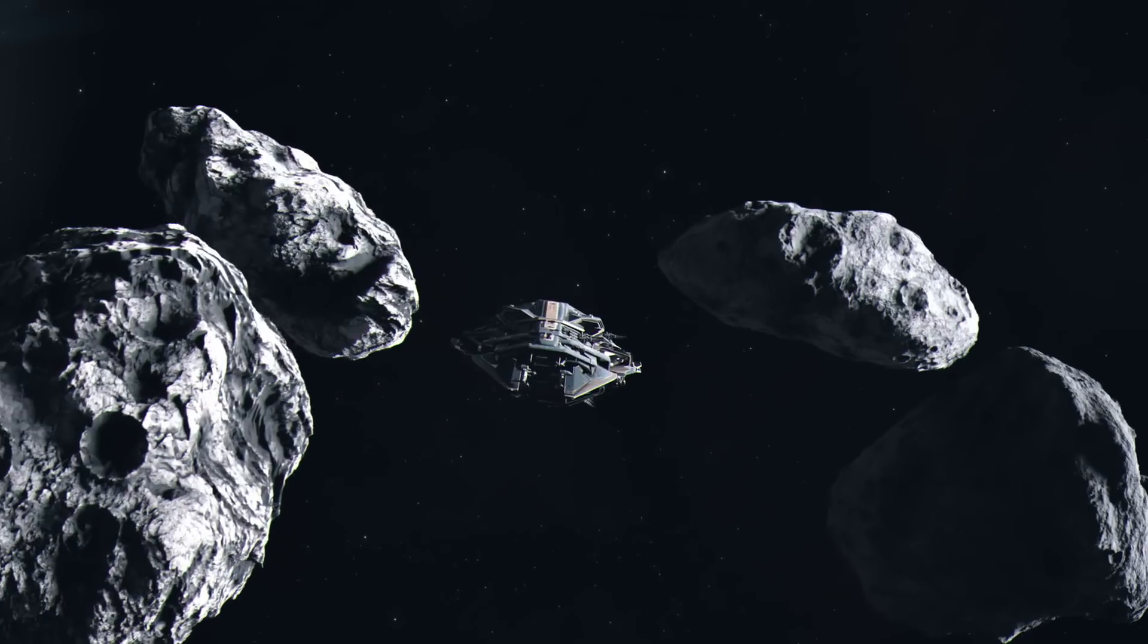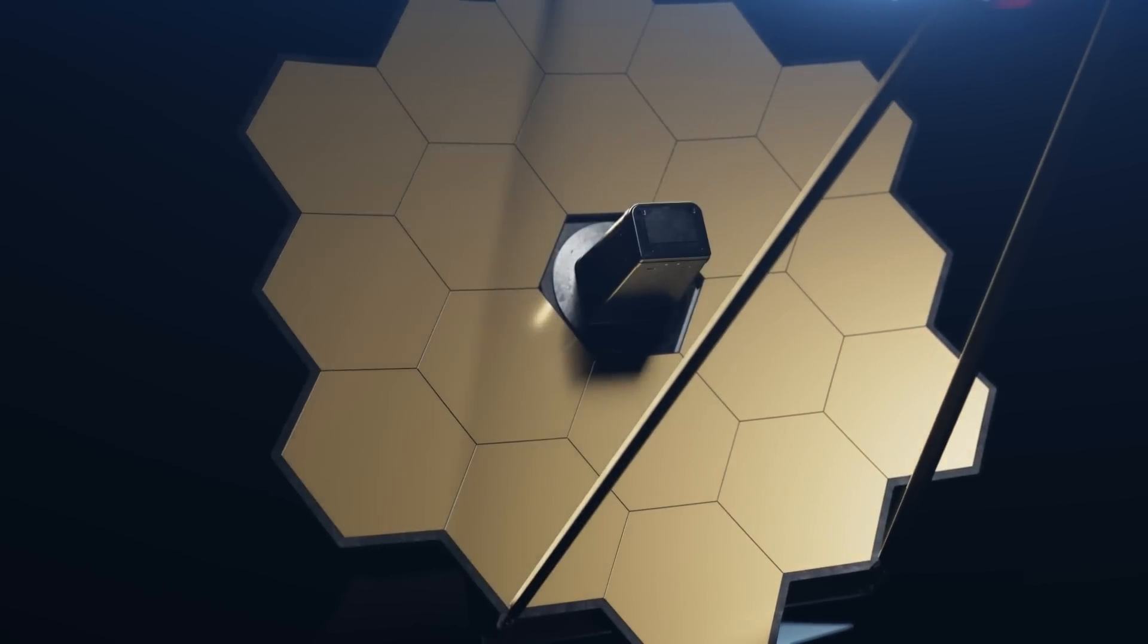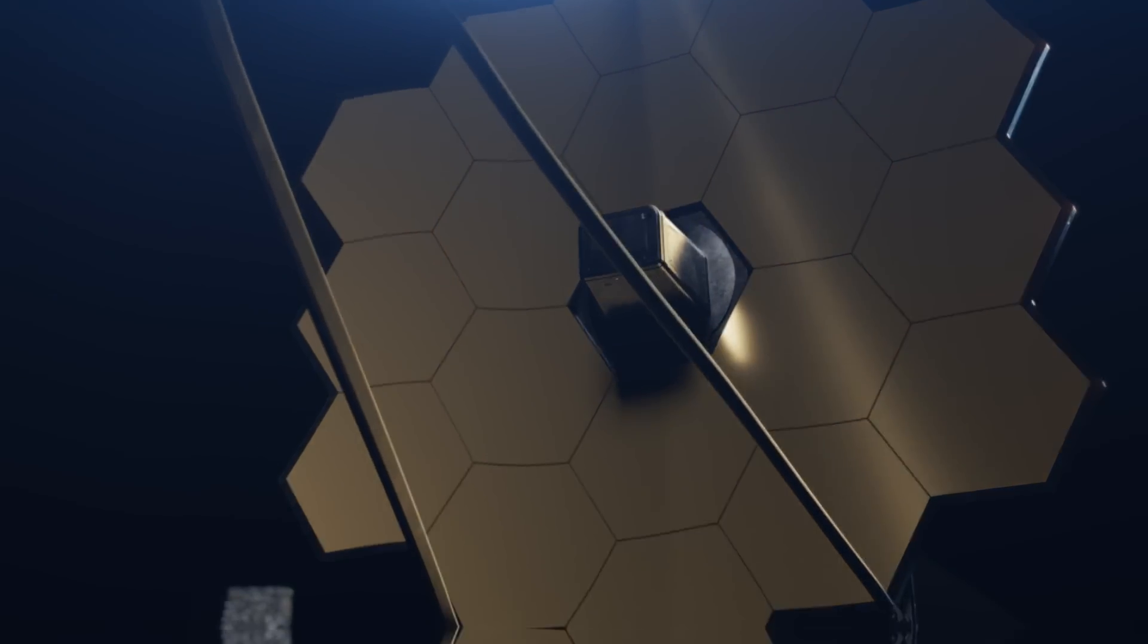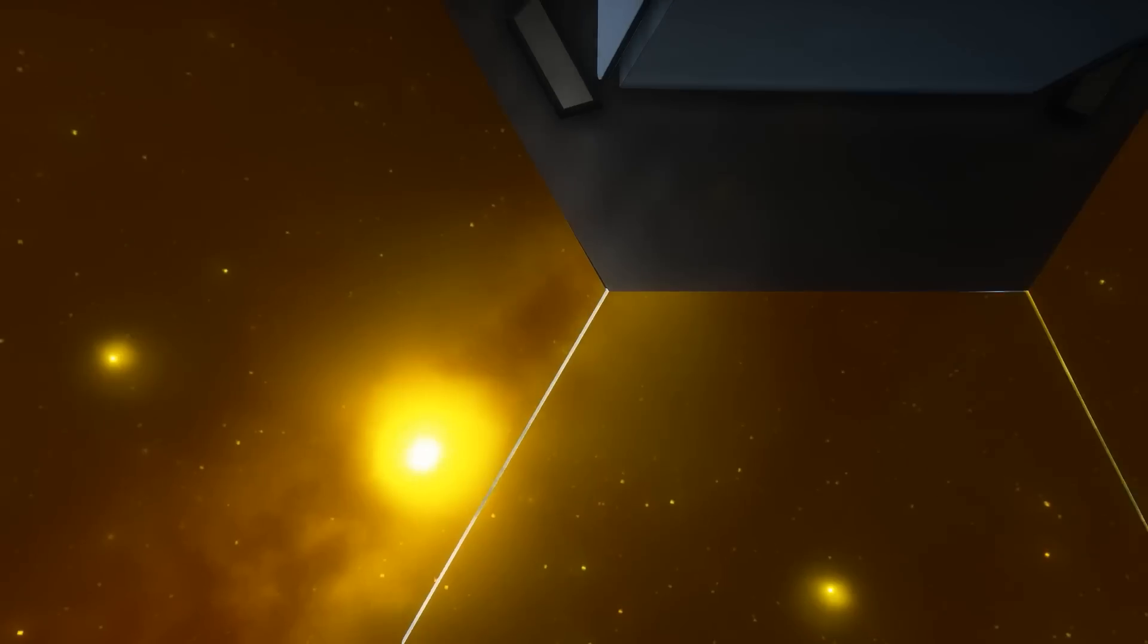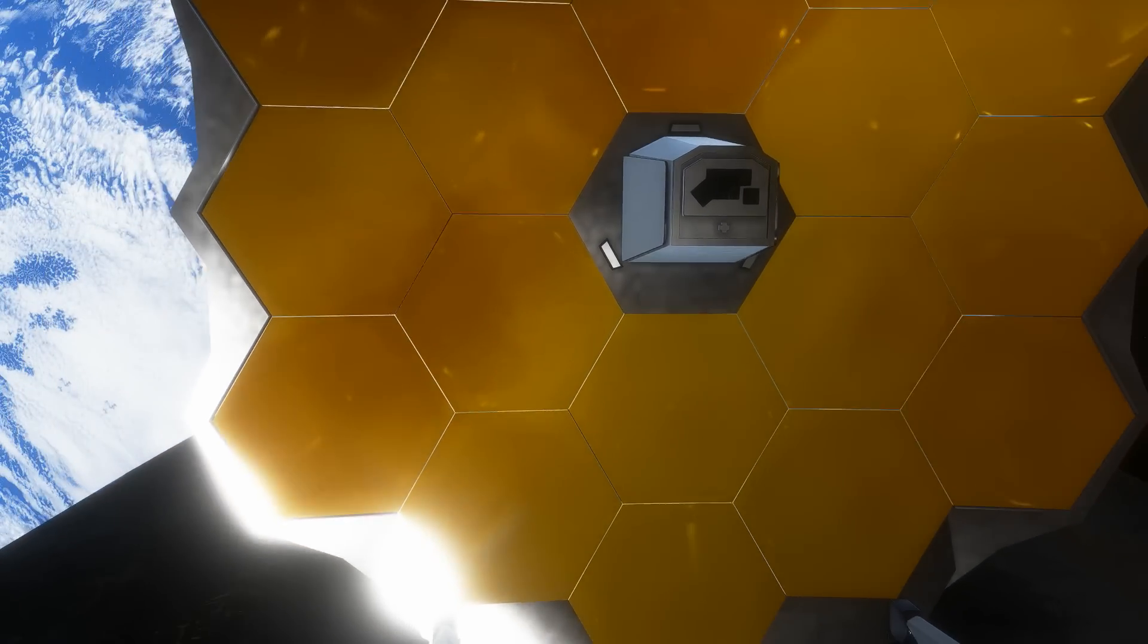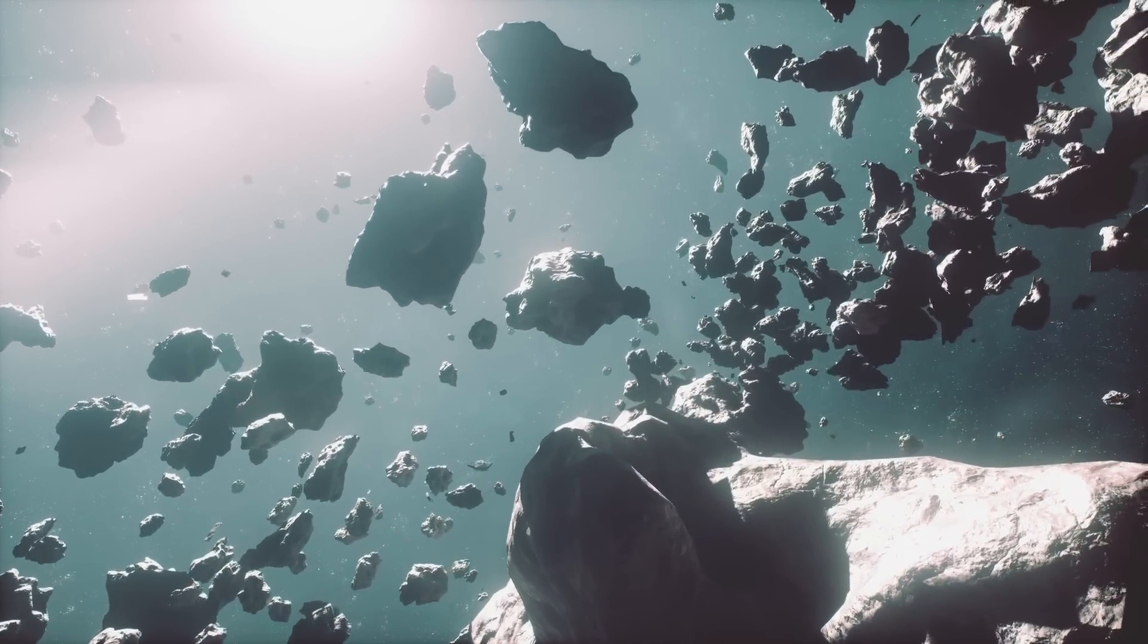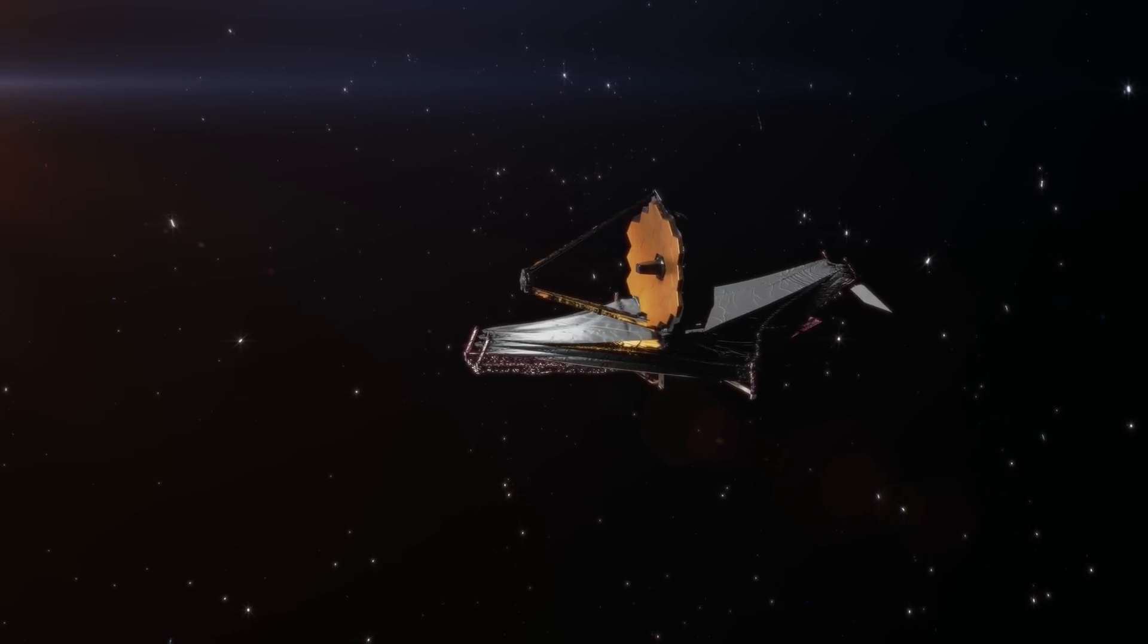These small asteroids hold the key to understanding the birth and evolution of our solar system, but they have remained largely unstudied due to the difficulty of observing them. The JWST's discovery of this small asteroid suggests that the telescope may continue to detect more of these elusive objects, opening up new avenues of research. Although the full implications of this accidental discovery are unknown, it is clear that the JWST's capabilities extend far beyond the study of distant galaxies. In the future, the telescope will likely conduct dedicated observations to study asteroids smaller than one kilometer in size, providing new data that could revolutionize our understanding of the solar system's early years.